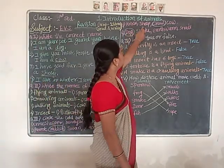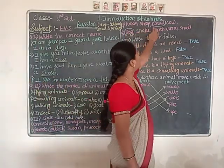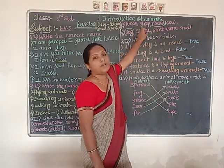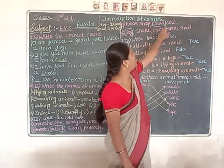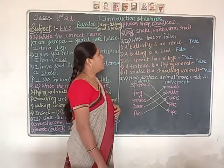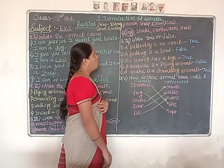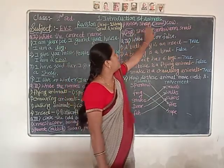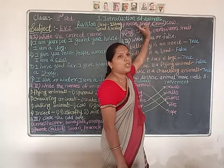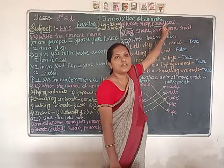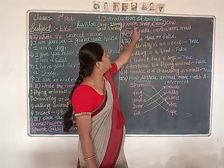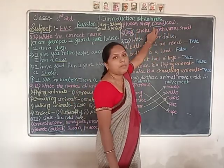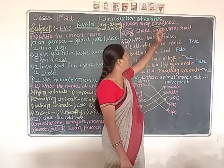Next group: horse, swan, peacock, and crow. Horse, swan, and peacock are all animals, and crow is a bird. So circle the crow.